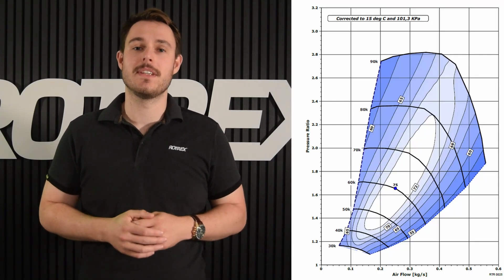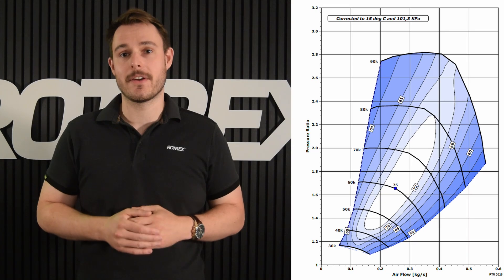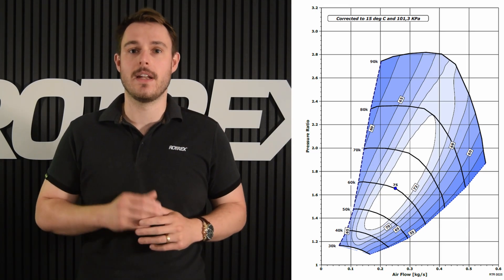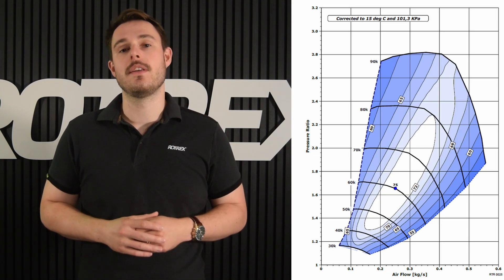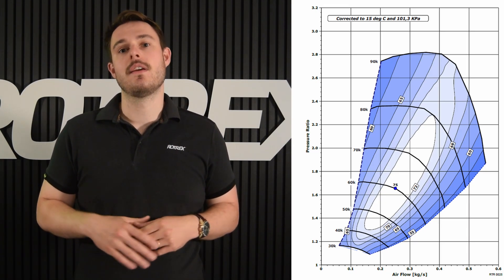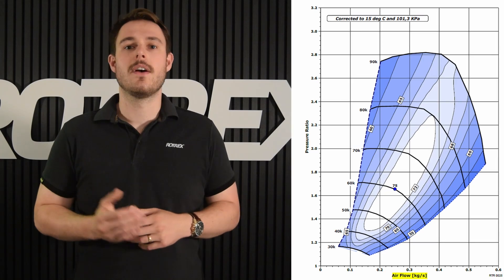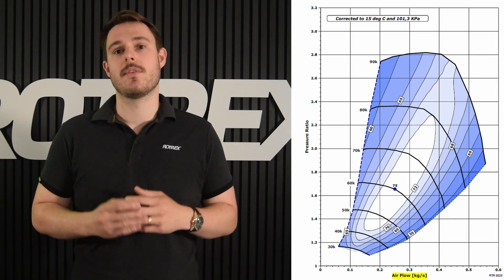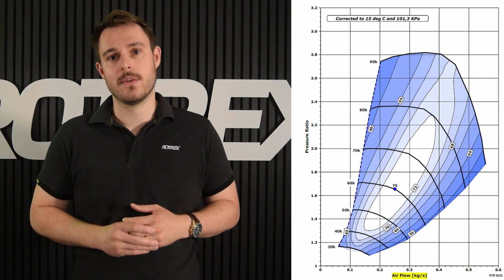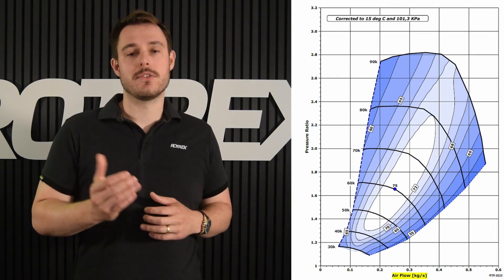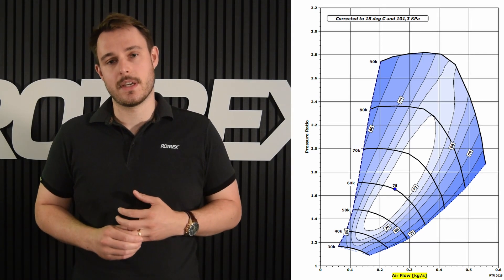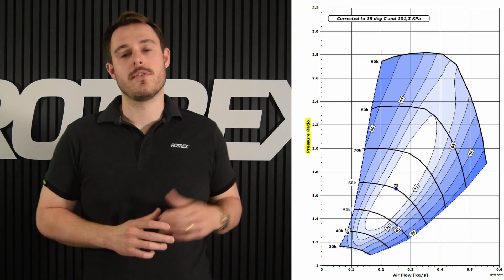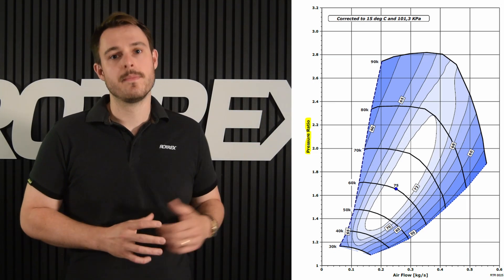A compressor map is basically a diagram showing how much pressure ratio and airflow you're going to get for any given speed. On the x-axis you're going to have mass airflow, measured in kilograms per second, and on the y-axis you're going to have your pressure ratio.